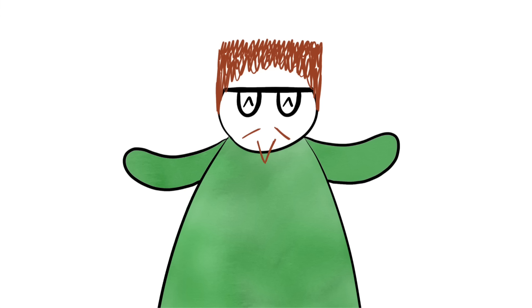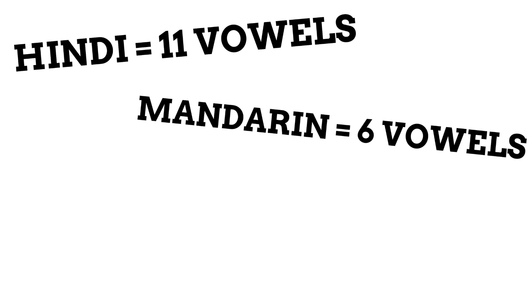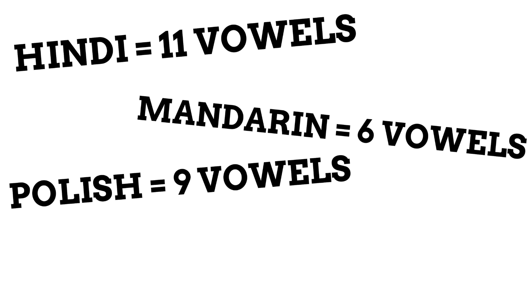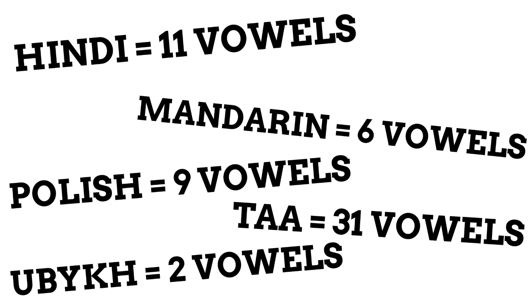It's also worth mentioning that this video has primarily been focusing on the English language. The amount of vowels in languages can differ from language to language. Hindi, for example, has 11 vowels. Mandarin has just 6 vowels, and Polish has 9 vowels. Apparently, the language with the most vowels is the Taa language, native to the nations of Botswana and Namibia — Wikipedia says it has 31 different vowel sounds, impressive to say the least. And as for the language with the least vowels, that award apparently goes to the Ubykh language, which is now extinct, though was spoken in the Caucasus region, and is believed to have had just 2 vowel sounds.